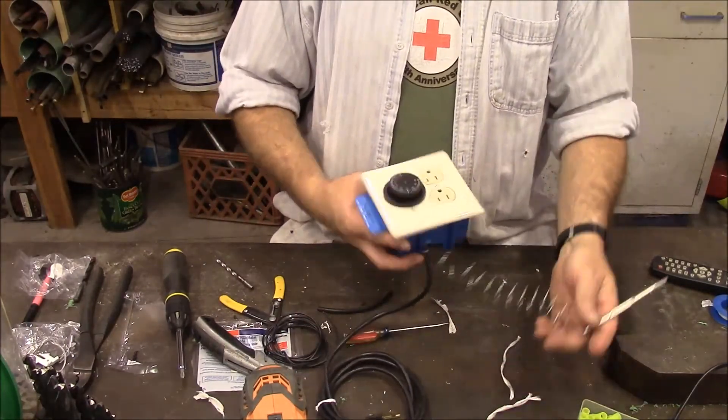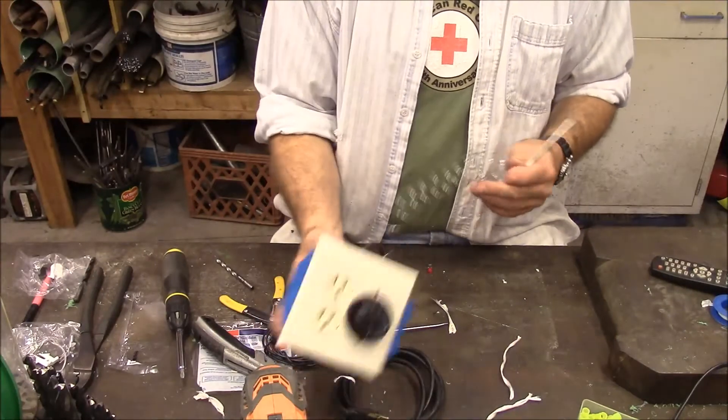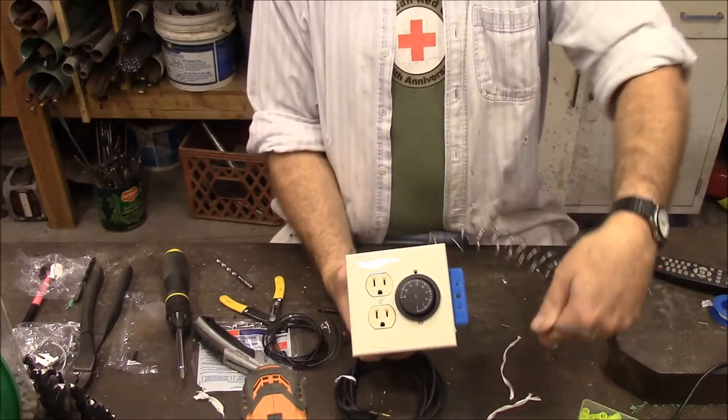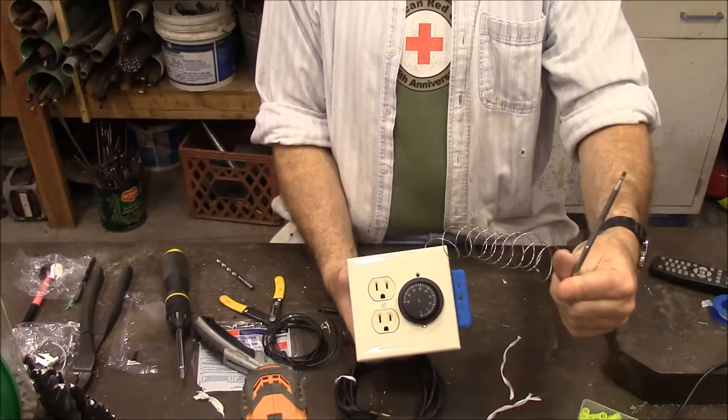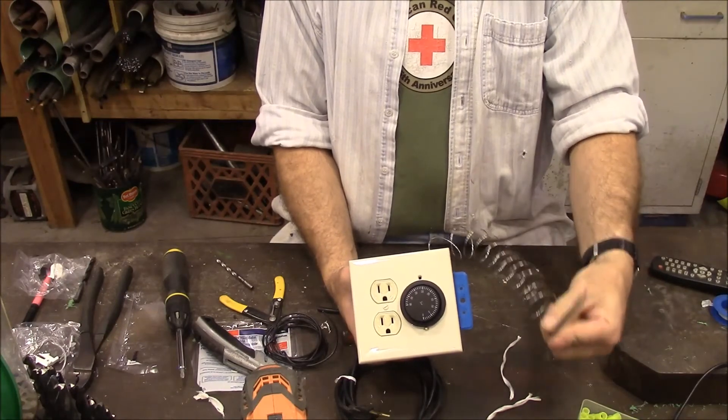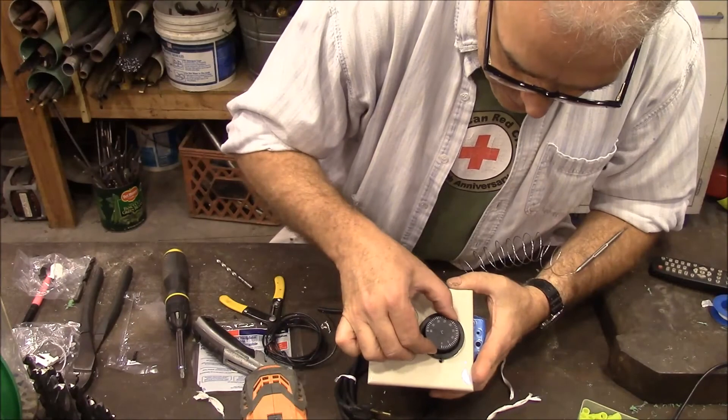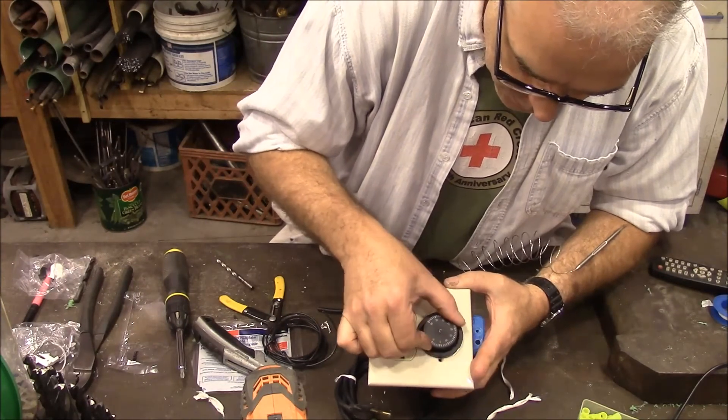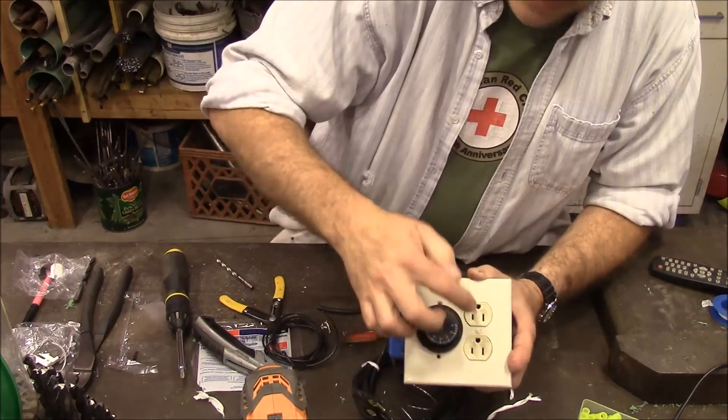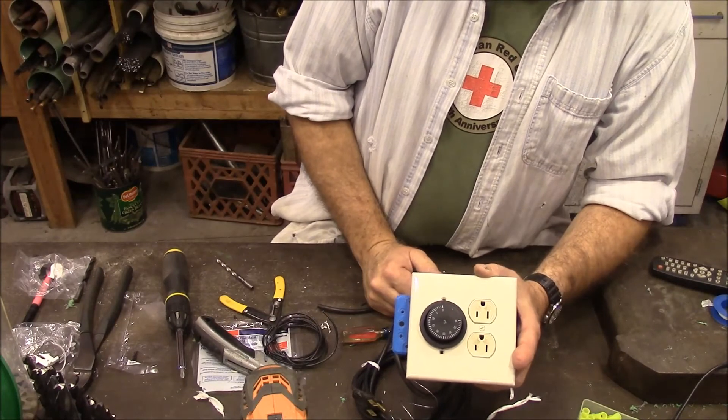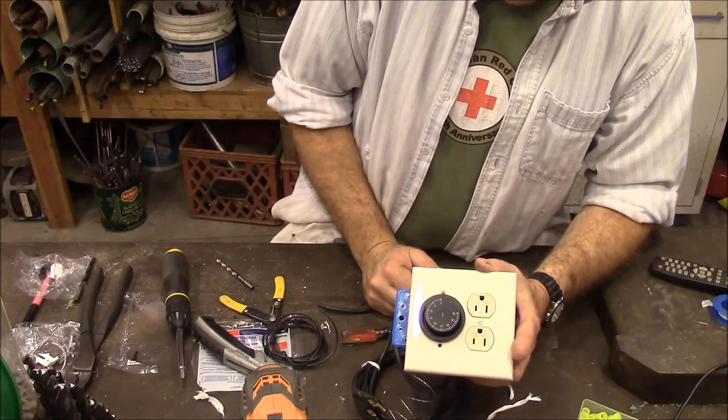So in this case, we will take this, we'll put this bulb down into the water in our chicken waterer. This is where we'll set our temperature, right here. And power will come out right here. I hope this was helpful. Thank you for watching.